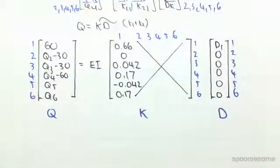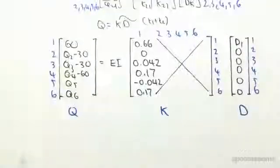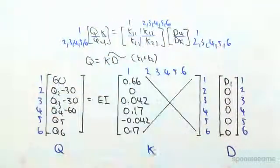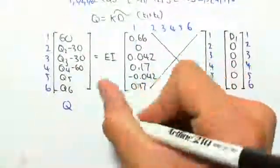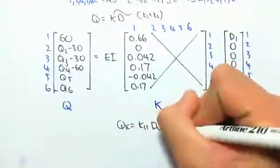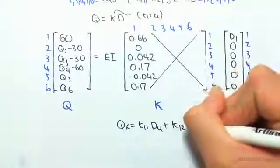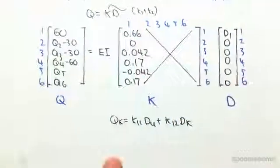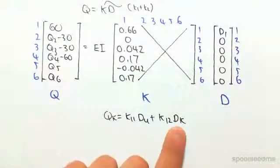We're going to find the unknown displacement and unknown forces or reactions. We know that q known equals k11 d unknown plus k12 d known. Expanding out that matrix, because d known is just a zero matrix, that goes to zero and we're just left with this. So partitioning this matrix to show you what I mean.